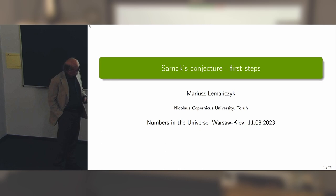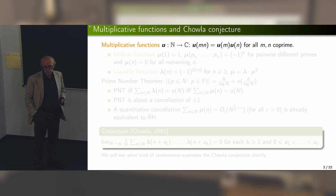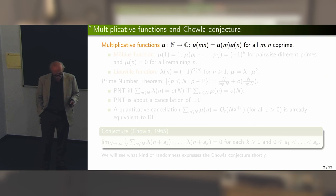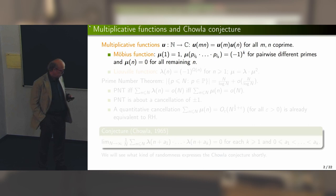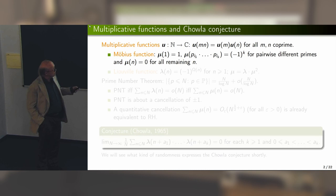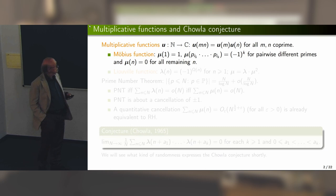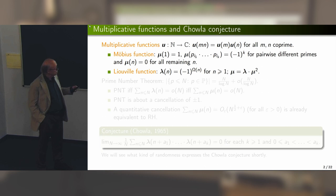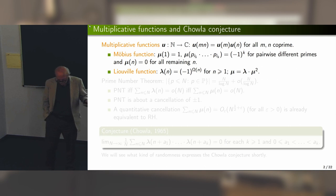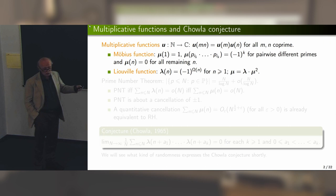Let's start with some recollections, because most of the notions you can see here already appeared in lectures by Terence Tao or Vitali Bergelson. We have the notion of a multiplicative function, defined by the condition that f(mn) = f(m)f(n) when M and N are co-prime. Then there is the Möbius function, which measures the parity of the prime factorization of a natural number, and the related Liouville function. There is also the obvious relationship between these two multiplicative functions, where mu-squared is the characteristic function of the set of square-free numbers.